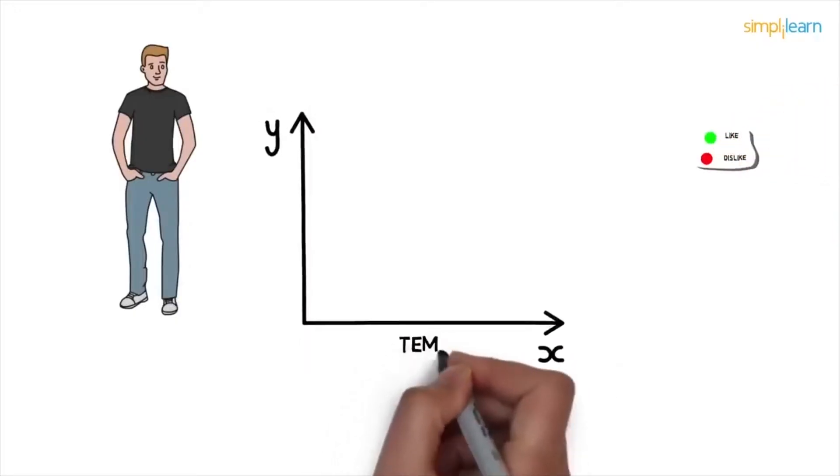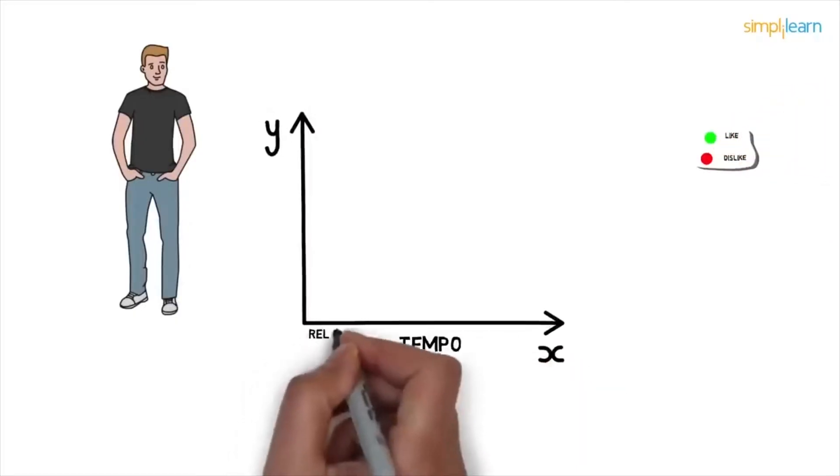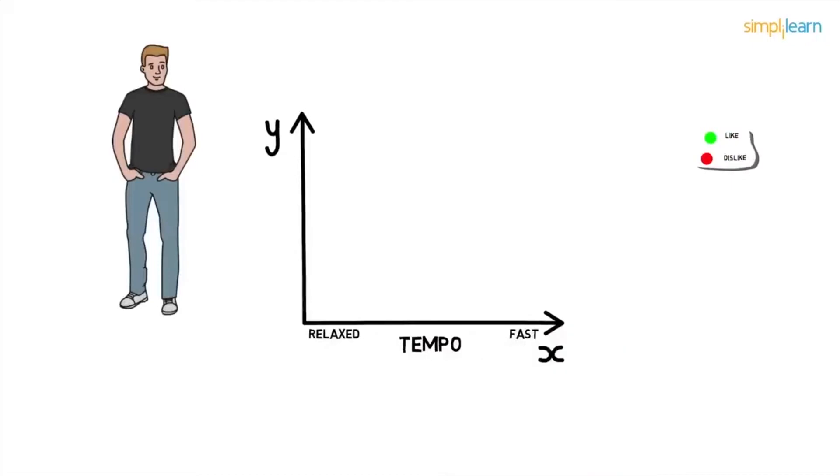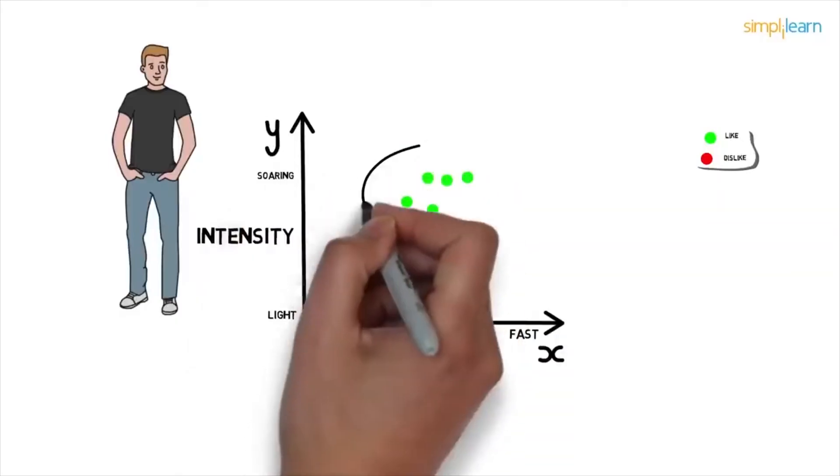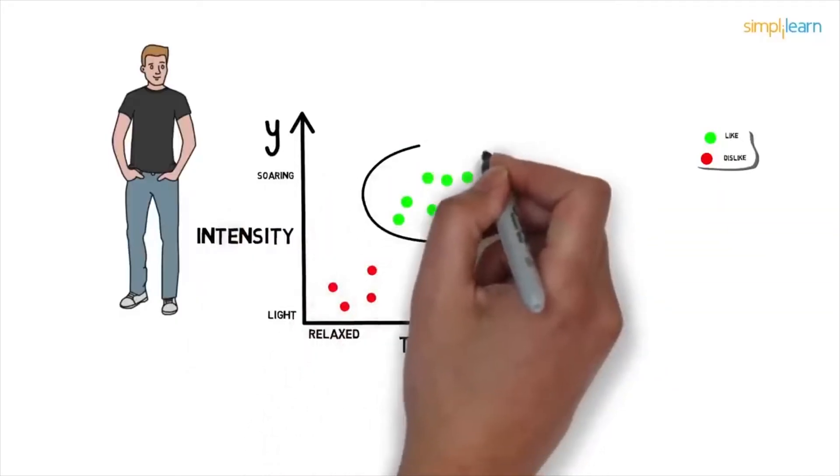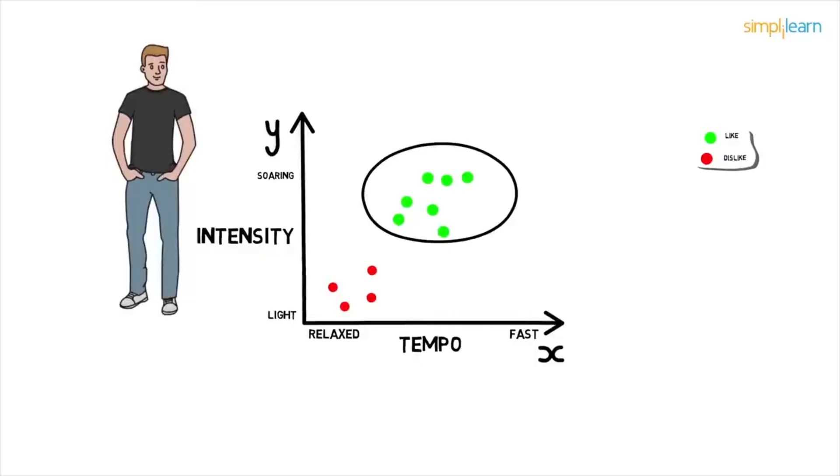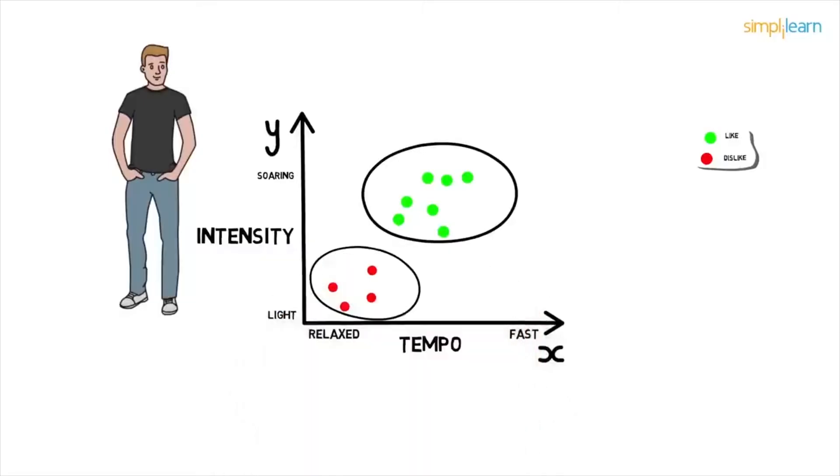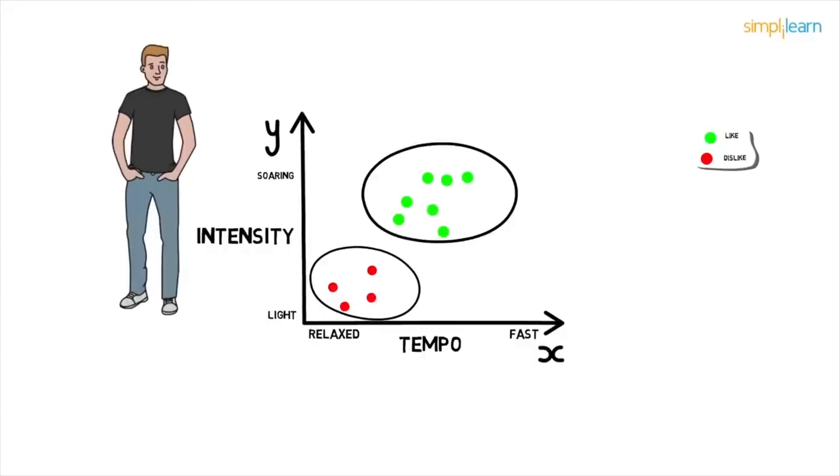So here, tempo is on the x-axis ranging from relaxed to fast, whereas intensity is on the y-axis ranging from light to soaring. We see that Paul likes the song with fast tempo and soaring intensity while he dislikes the song with relaxed tempo and light intensity.